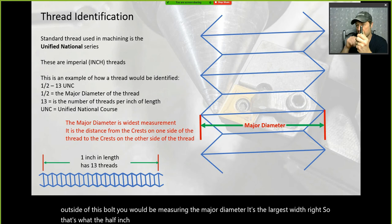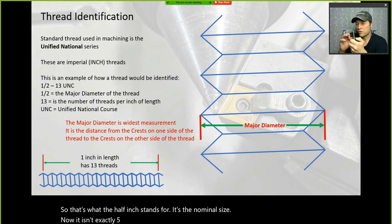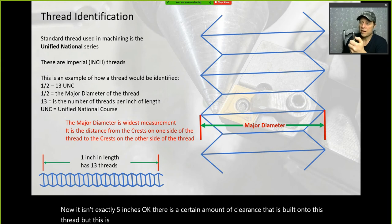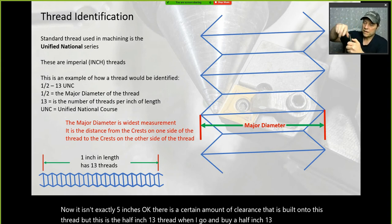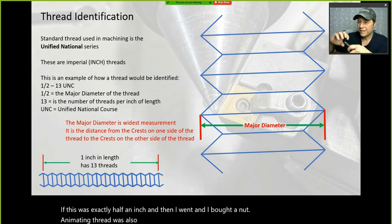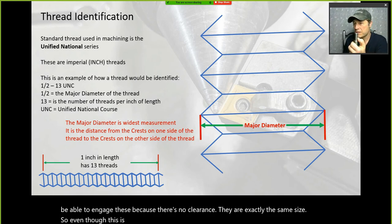The half-inch is the nominal size. It isn't exactly 0.5 inches — there is a certain amount of clearance built onto this thread. When you buy a half-inch 13 nut, it will fit. If the bolt and nut were both exactly half an inch, you'd never get them assembled because there's no clearance.